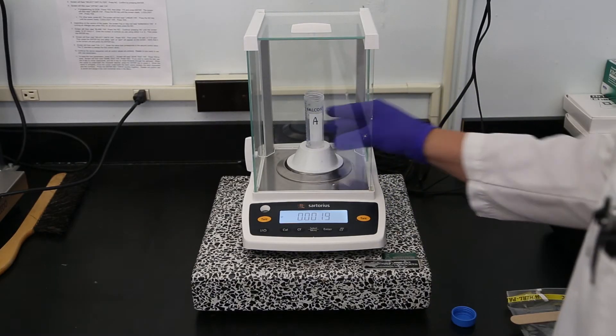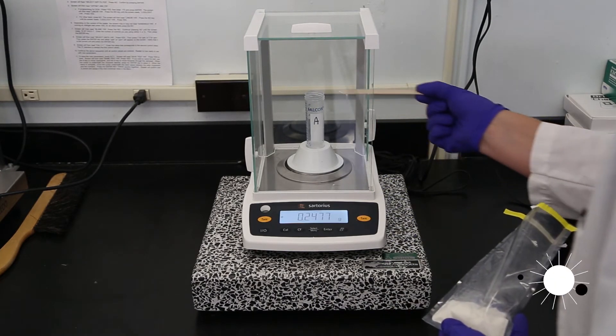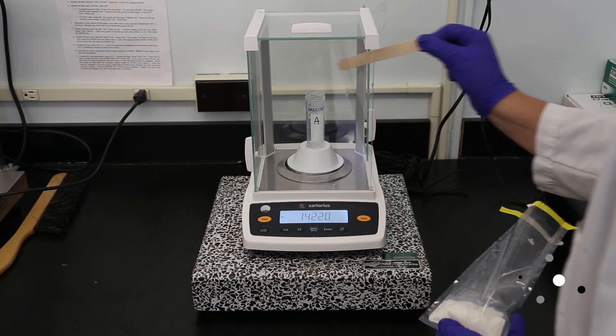Place a new 50 cc centrifuge tube on the scale and zero out. Weigh out 0.25 grams of sample into the tube.